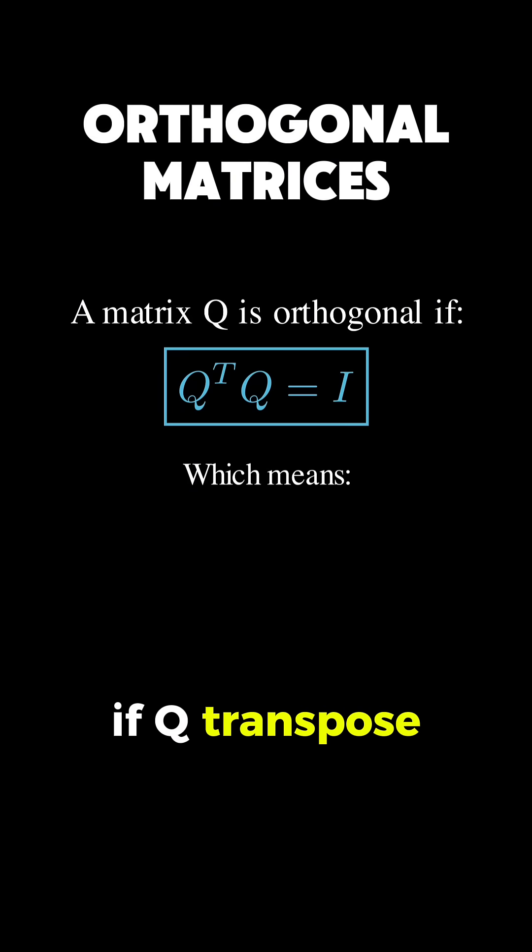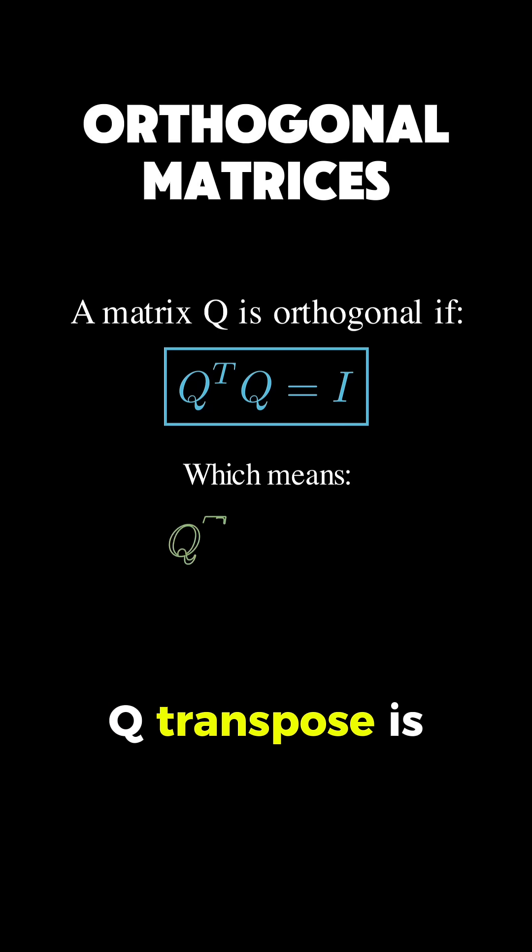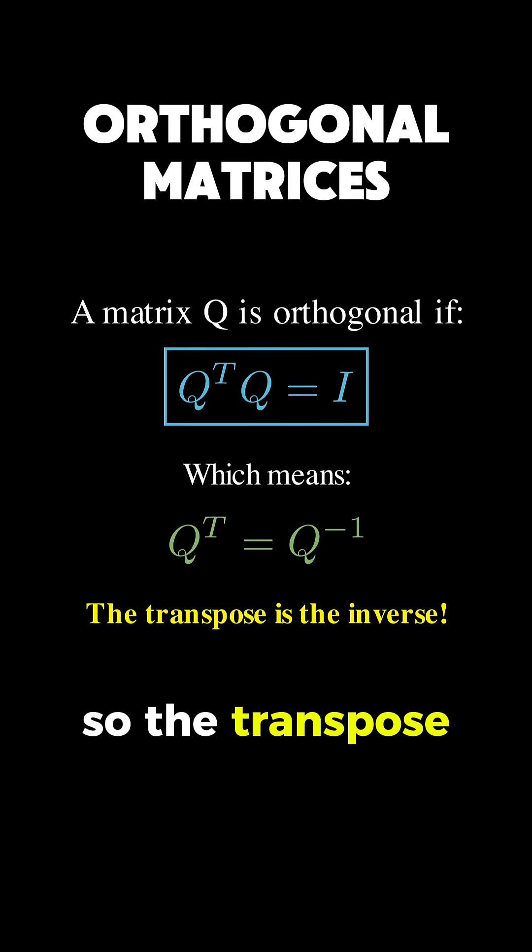If Q transpose Q equals I, then that tells us something beautiful. Q transpose is equal to Q inverse. So, the transpose is the inverse.